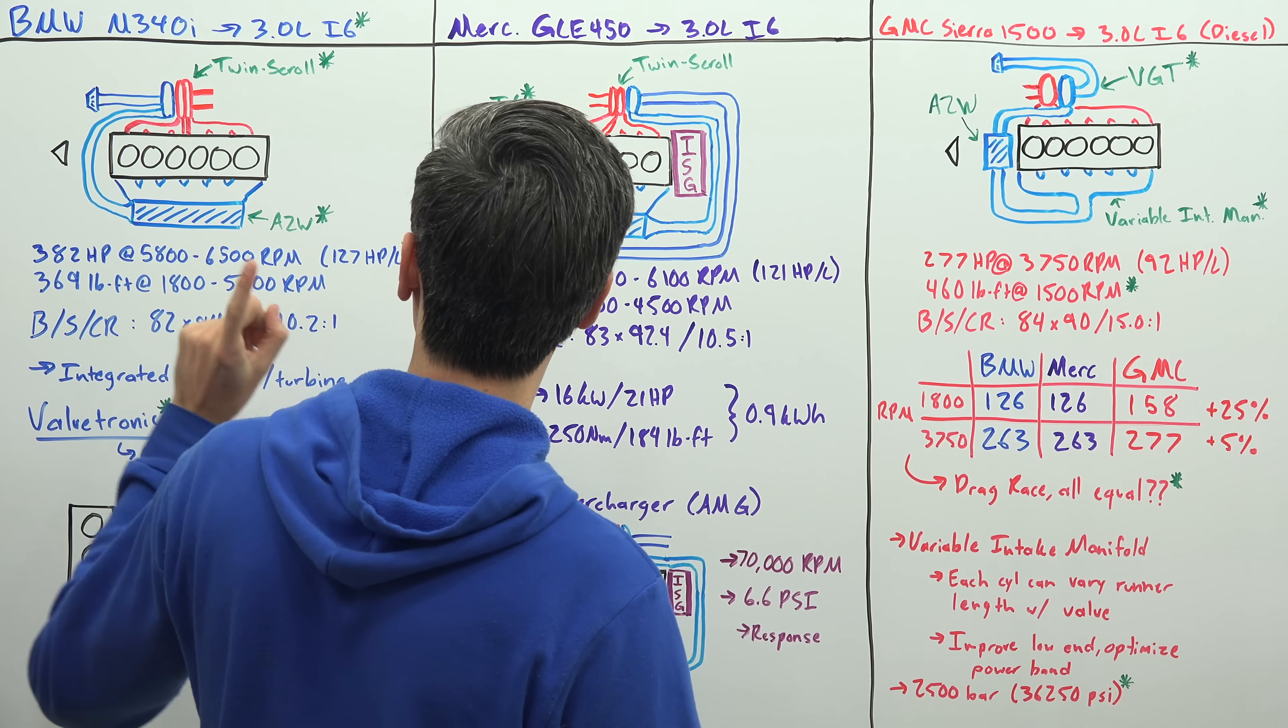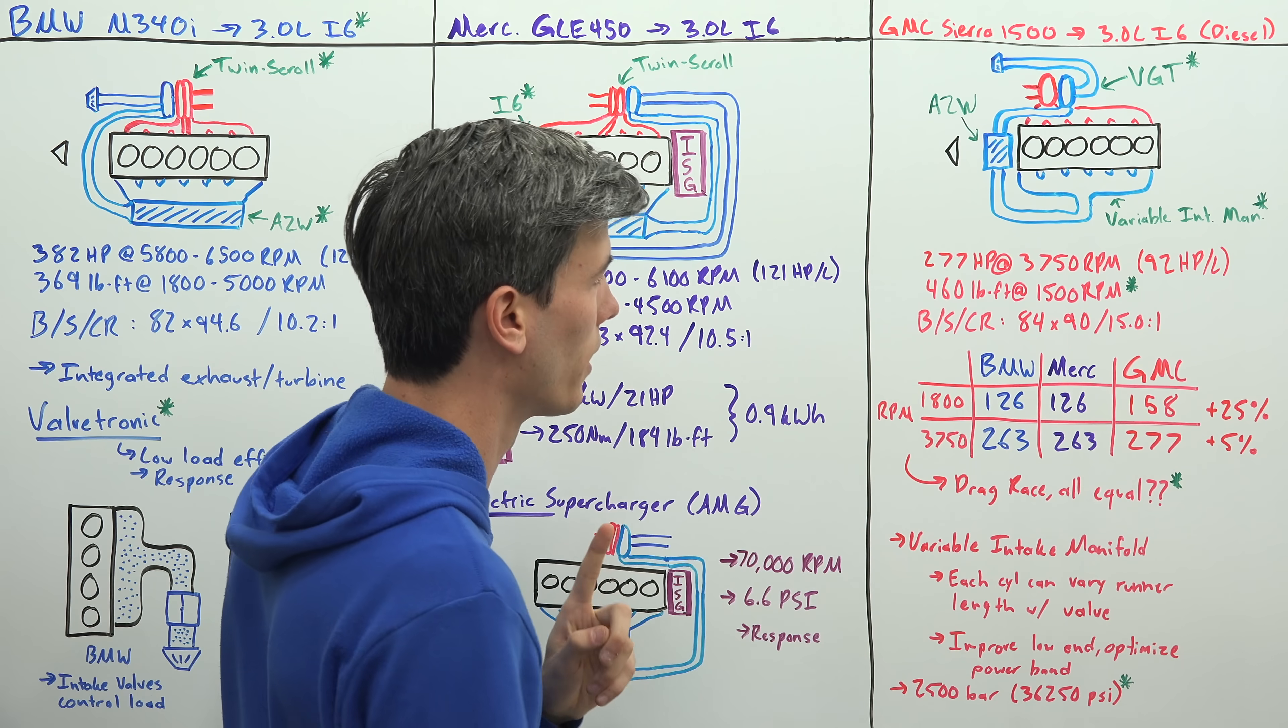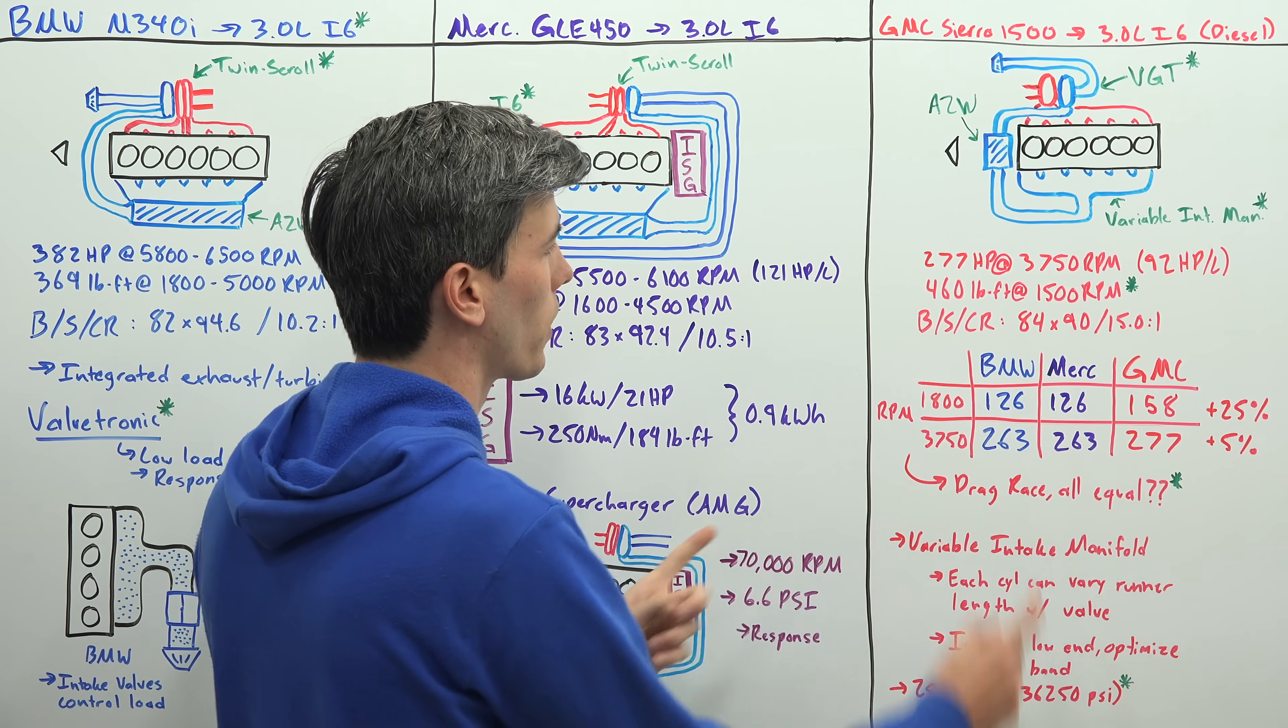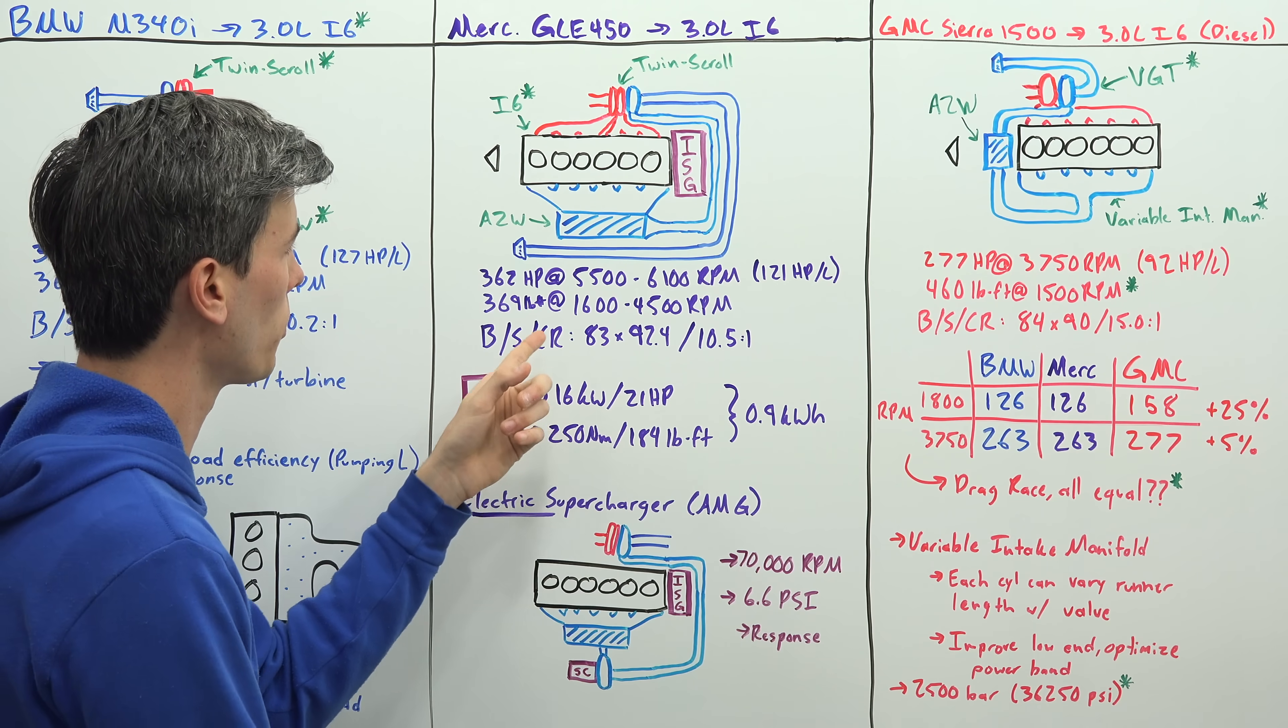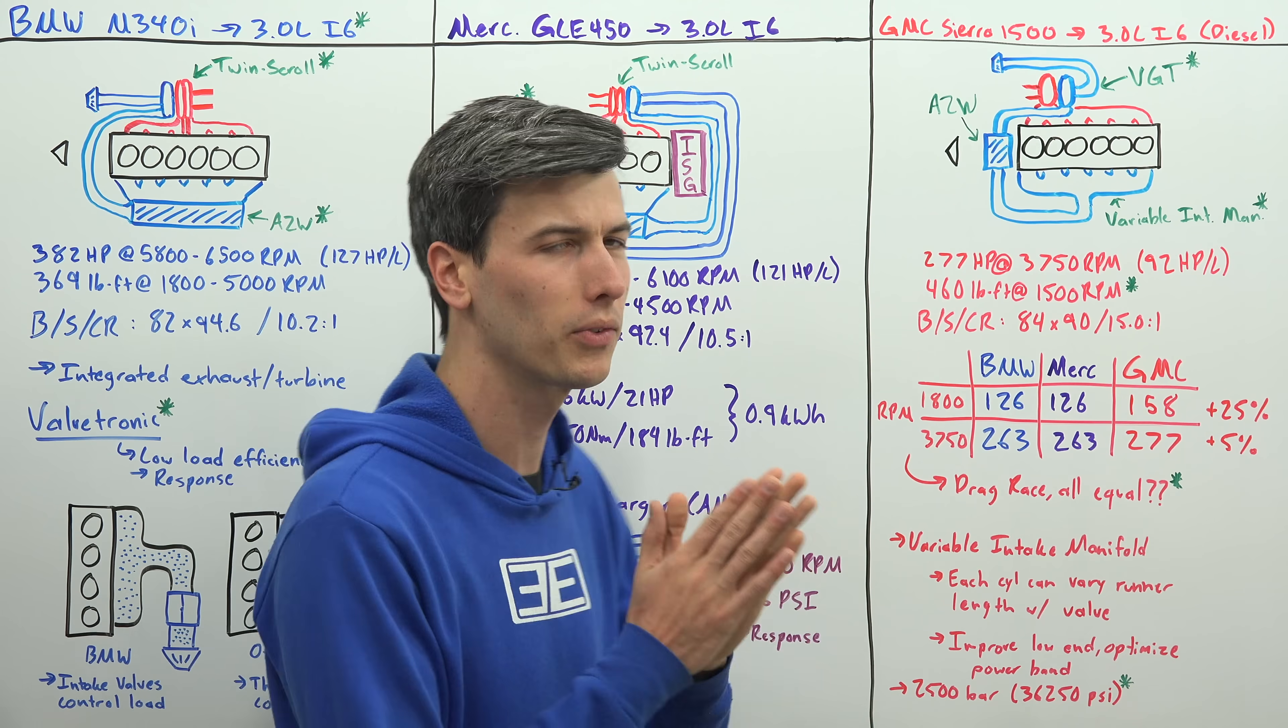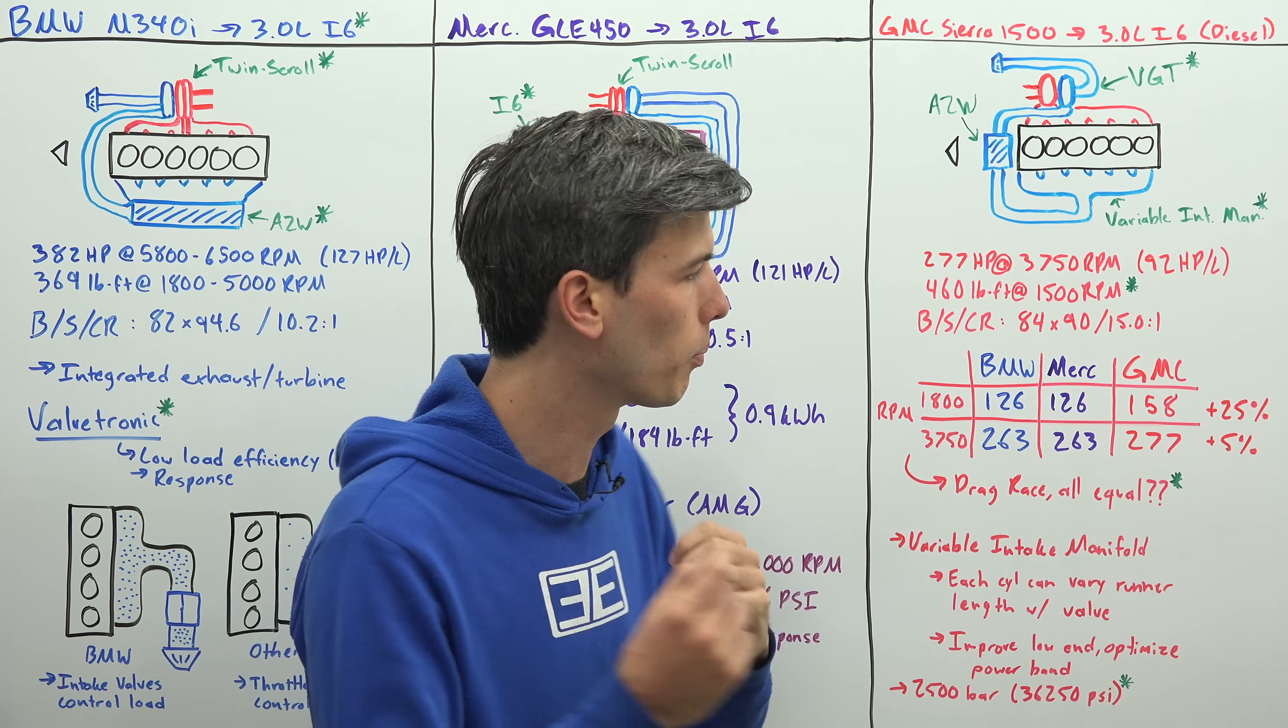The GMC would be the quickest initially because it gets to that peak torque very quickly and the Mercedes would be somewhat in the middle. But things would change very quickly. The GMC would get the launch, but only very briefly. Once you get to about 4000 RPM, then our BMW and our Mercedes start to take the lead.